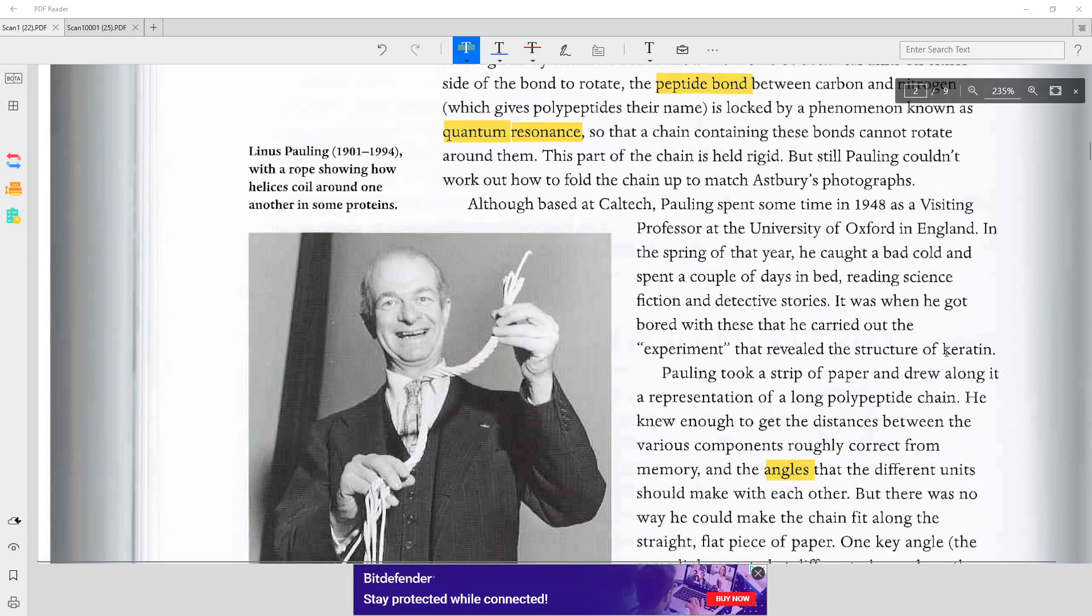Although based at Caltech, Pauling spent some time in 1948 as a visiting professor at the University of Oxford in England. In the spring of that year, he caught a bad cold and spent a couple of days in bed, reading science fiction and detective stories.